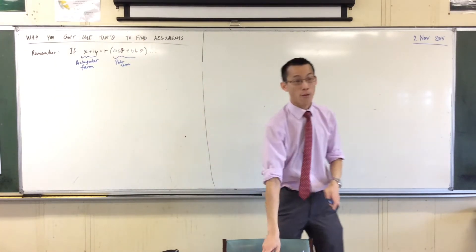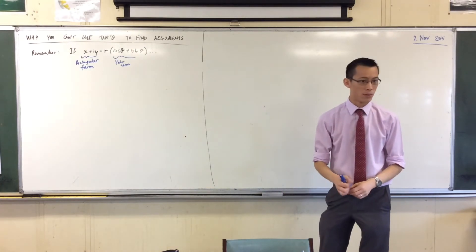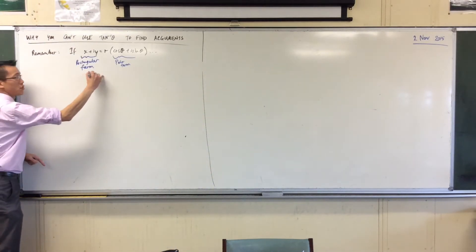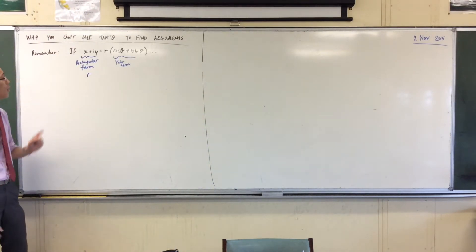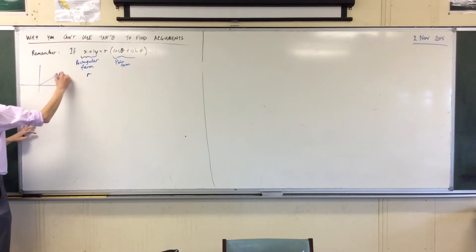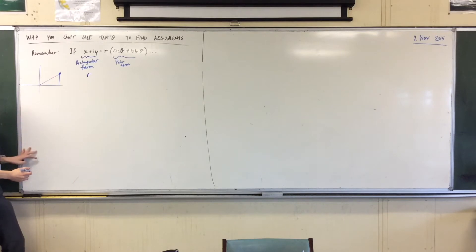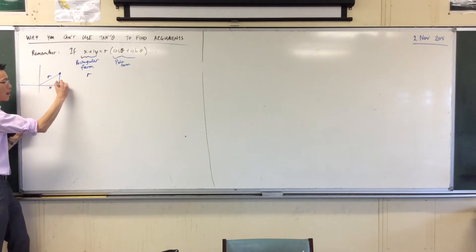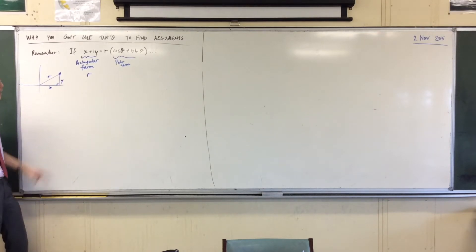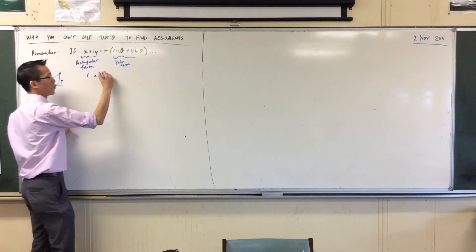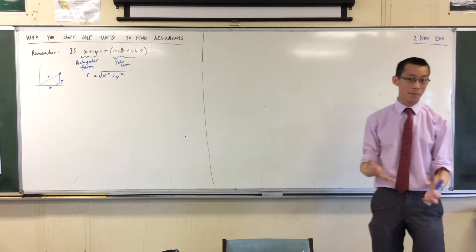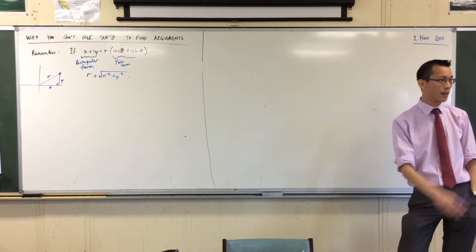How do we normally convert from rectangular to polar form? The first thing we do is find the modulus. We remember that for the complex number x plus iy, r is the modulus — the distance from the origin — and x is the horizontal part and y is the vertical part. So we use Pythagoras' theorem here. We only need to consider one case because r, the modulus, is a length, so we only have the positive case.